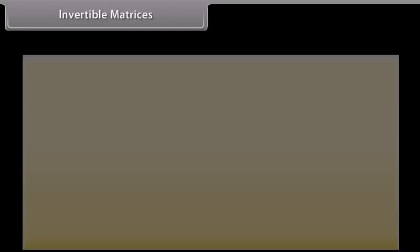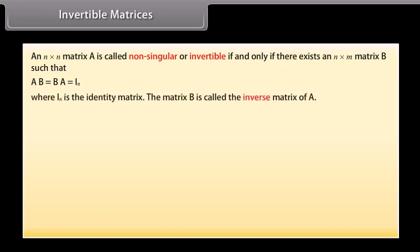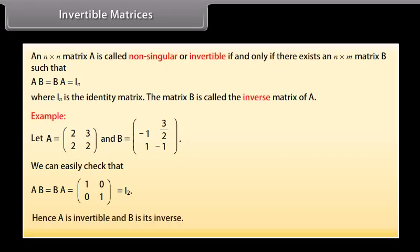Invertible matrices. An n×n matrix A is called non-singular or invertible if and only if there exists an n×n matrix B such that AB = BA = Iₙ, where Iₙ is the identity matrix. The matrix B is called the inverse of A. For example, given matrices A and B, we can verify that AB = BA = I. Hence A is invertible and B is its inverse.